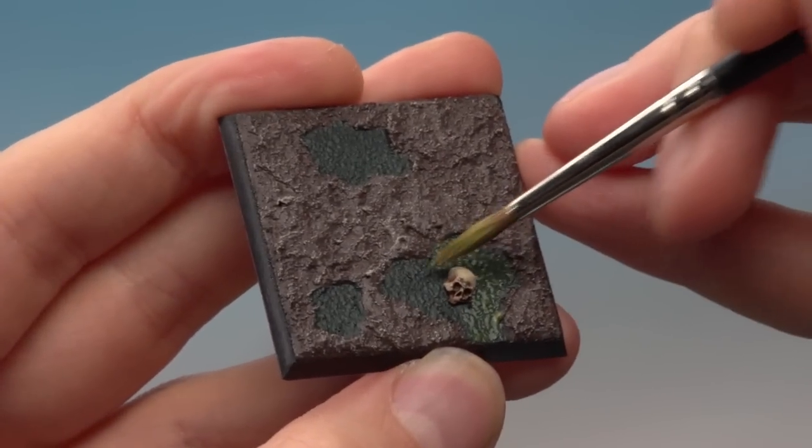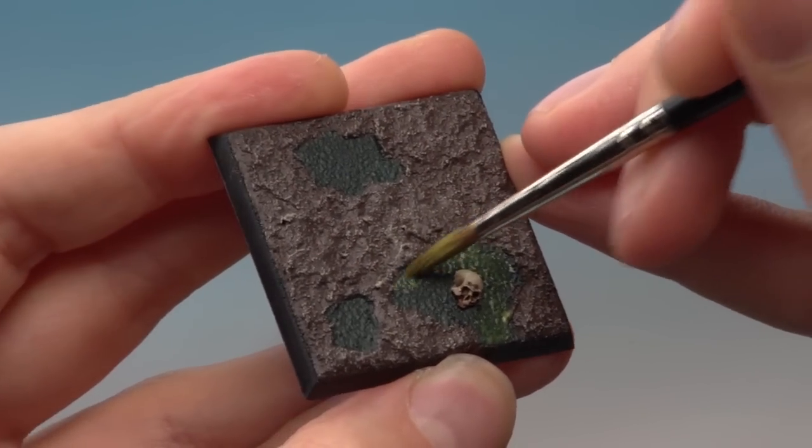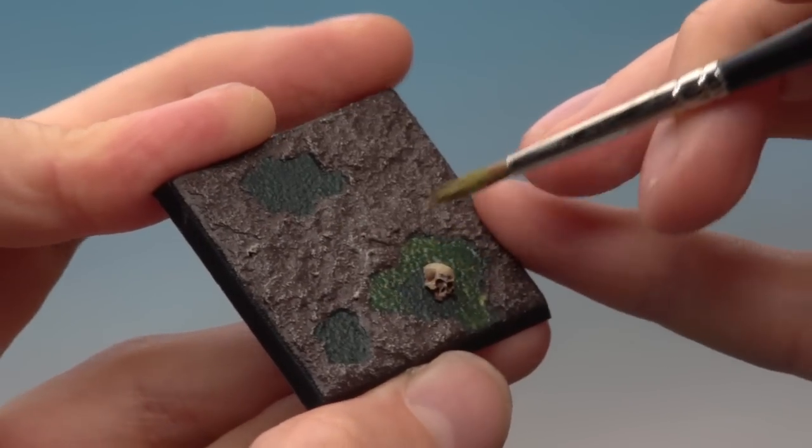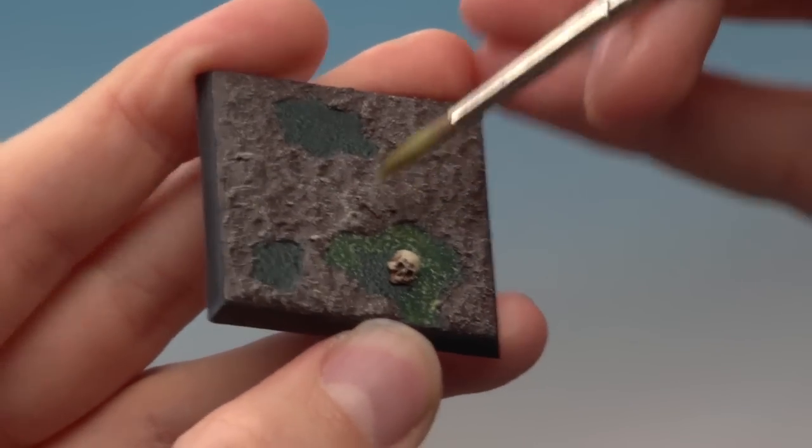Let this first coat dry, then apply another one afterwards. If you do it that way, you'll build up a much smoother finish, a much smoother one than if you do one really thick layer.